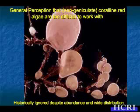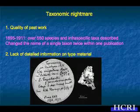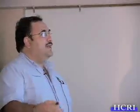Most people have a general perception that non-geniculate crustose coralline algae are too difficult to work with. Historically they have been ignored despite their abundance and wide distribution. The taxonomic nightmare of coralline algae is real, but it is historically man-made: between 1895 and 1911, over 550 species were described, and some authors from that era were changing the name of a single taxon twice within the same publication. The taxonomic nightmare came from the unprofessional way taxonomy was practiced in the early days. To sort out the mess, we have to use type material and link names with original type material from different collections.